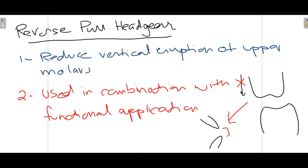The basic function of the reverse pull headgear is to reduce the vertical eruption of the upper molars. When vertical movement of the upper molar is reduced or eliminated, the anterior OpenBite is reduced or at least prevented from worsening, because continued eruption would increase that distance and worsen the OpenBite. The reverse pull headgear can also be used in combination with functional appliances, either fixed or removable, as different treatment modalities are combined to achieve elimination of OpenBite.